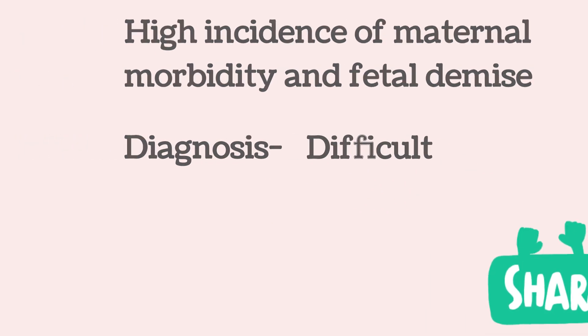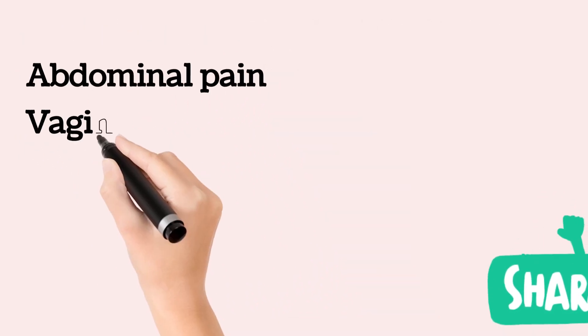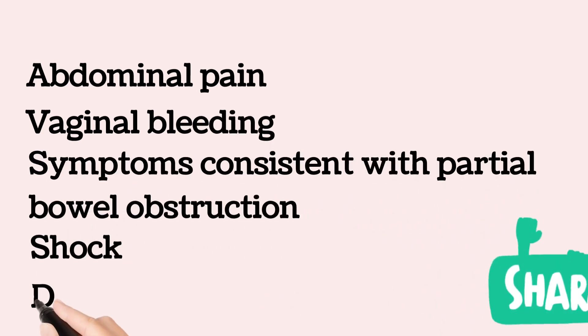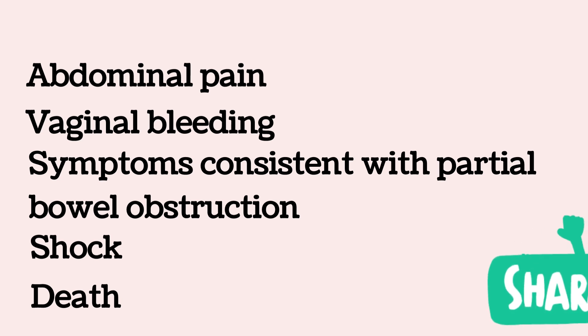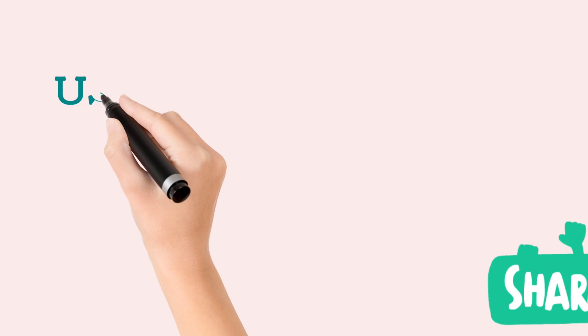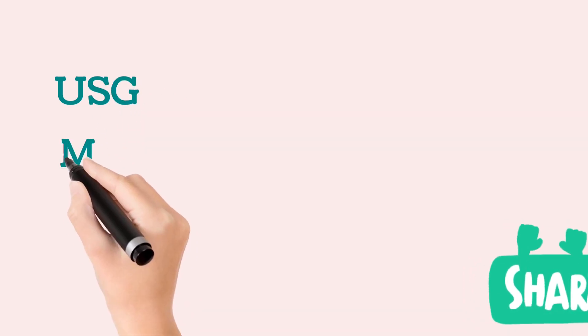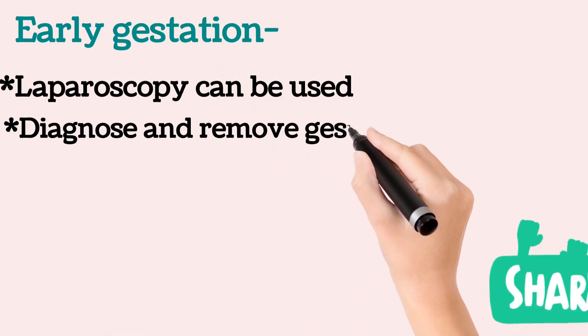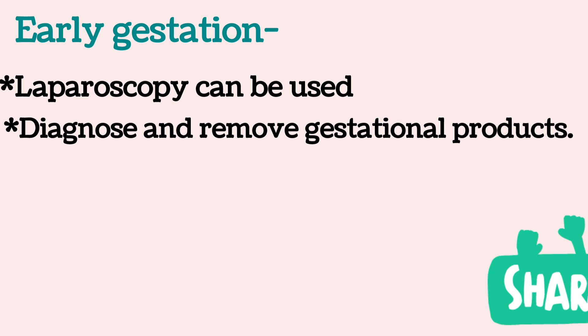Diagnosis of abdominal pregnancy can be difficult. Abdominal pain, vaginal bleeding, symptoms consistent with partial bowel obstruction, shock, or death may be the first indication. Ultrasonography is useful but may miss the diagnosis in more than 50% of cases; MRI may prove to be a more sensitive diagnostic tool. If an extrauterine pregnancy is suspected at early gestational age, laparoscopy can be used to diagnose and remove the gestational product.